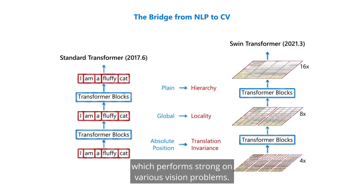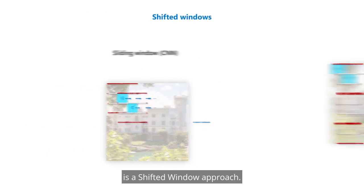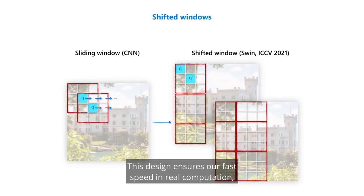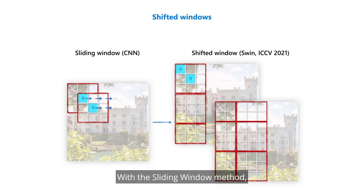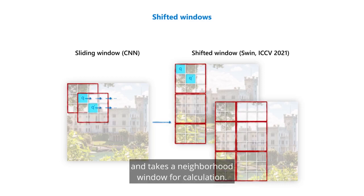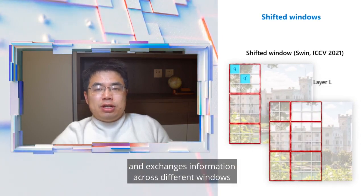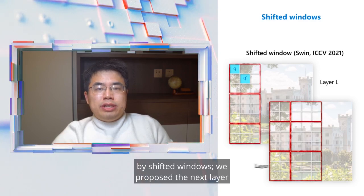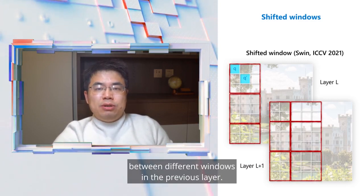We came up with Swin Transformer, which performs strongly on various vision problems. An important technical innovation is the shifted window approach. This design ensures fast speed in real computation, particularly compared to the sliding window approach used in our previous work of Local Relation Network. With the sliding window method, information was connected across neighborhood pixels — each pixel is centered on itself and takes a neighborhood window for calculation. To improve speed, our team proposes a design that uses non-overlapping windows and exchanges information across different windows by shifting them. We propose that in the next layer, the window configuration is shifted by half a window, so information can be exchanged between different windows from the previous layer.